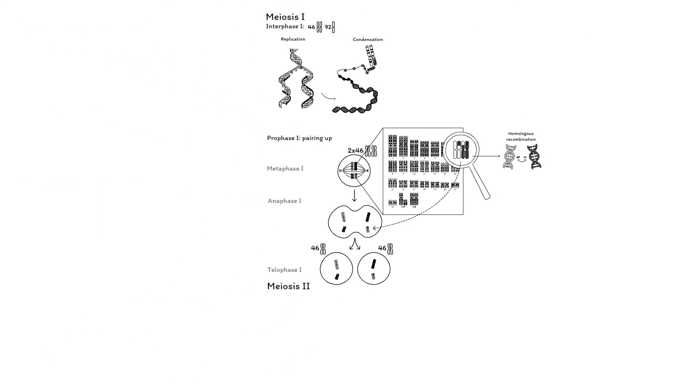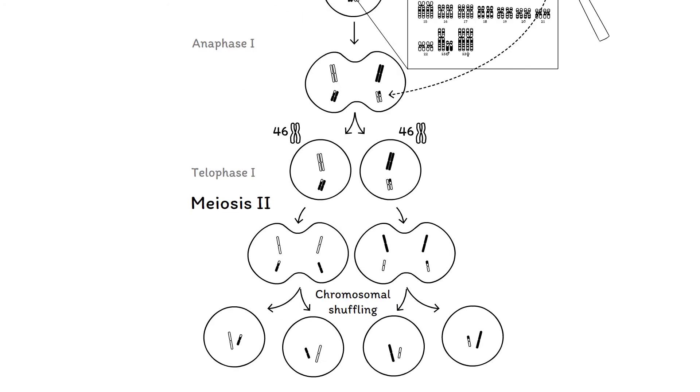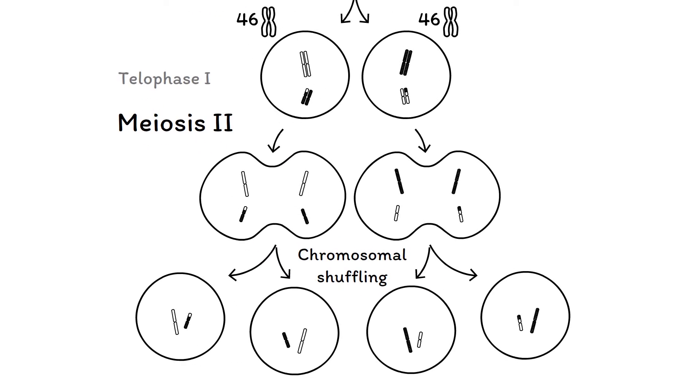During meiosis II, the chromatids of each chromosome are separated, forming four different haploid cells. The chromosomal shuffling that occurs as a result of homologous recombination and the random distribution of homologous pairs of chromosomes and chromatids is important for diversifying the genetic composition in each gamete.